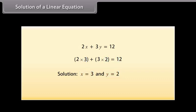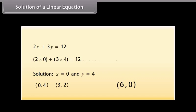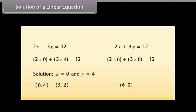We can write this solution as (3, 2) because the value of X is 3 and the value of Y is 2. Similarly, (0, 4) is also a solution because when you substitute X is equal to 0 and Y is equal to 4, the answer becomes 12. We have found at least two solutions for this equation. Can you find any other? Is (6, 0) also a solution? Yes, (6, 0) is also a solution because substituting X as 6 and Y as 0 also gives 12.